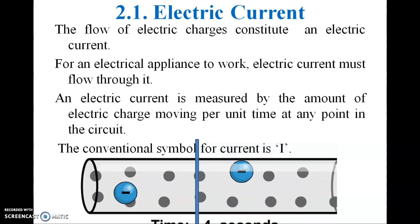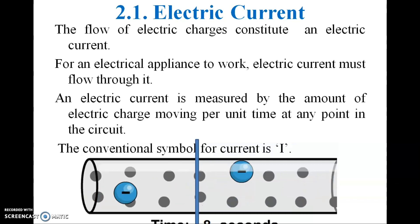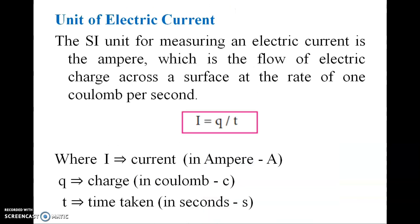The conventional symbol for current is I. The SI unit for measuring electric current is the ampere, which is the flow of electric charge across a surface at a rate of one coulomb per second. The formula to find current is I = Q ÷ T.